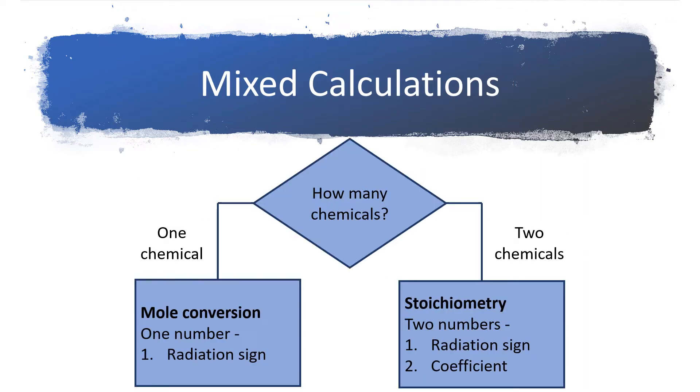One of the big challenges when you're taking a test is trying to decide, what kind of a problem is this? Is this a mole conversion problem or is this a stoichiometry problem? Because they really look very similar. So the question to focus on is how many chemicals is the question talking about? If the question is only mentioning one chemical, what you're going to do is a mole conversion problem like we've done previously. When you write your conversion factor, the top part and the bottom part of the conversion factor will have one number. That one number comes from the radiation sign. So if you have one chemical, you use one number in the top and you use one number in the bottom.